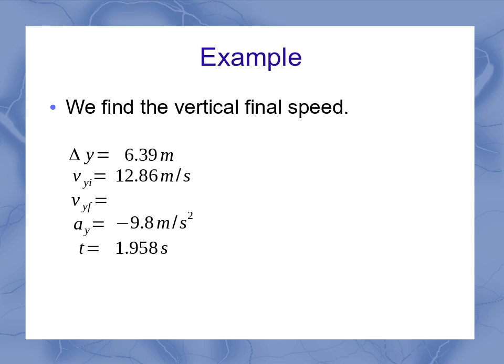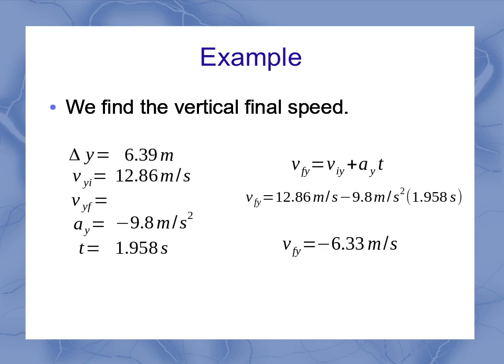For the vertical velocity, I have an acceleration, so I have to use my full equation here, plug in my initial velocity in the y direction and my acceleration and my time, and I find a negative 6.33 meters per second for the final velocity in the y direction. That means I'm going 6.33 meters per second downward, so the water balloon traveled up to its maximum height and was already on the way down when it hit the wall.